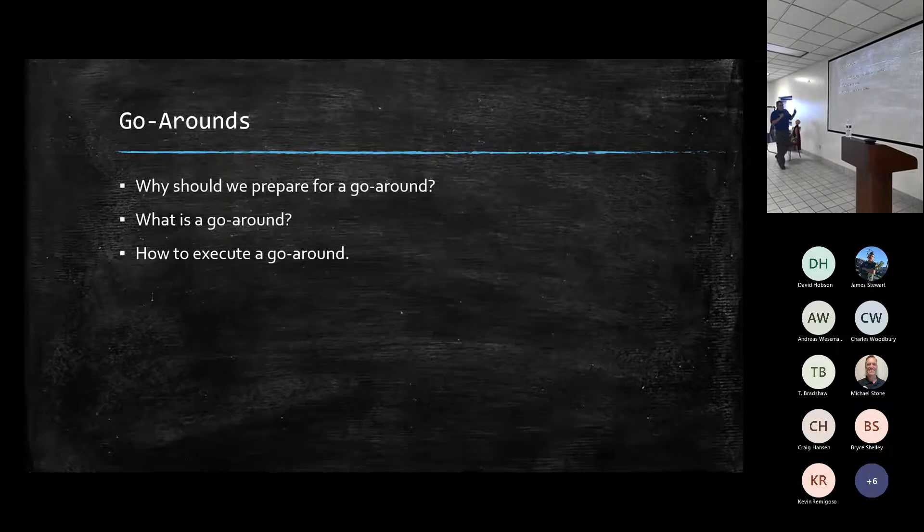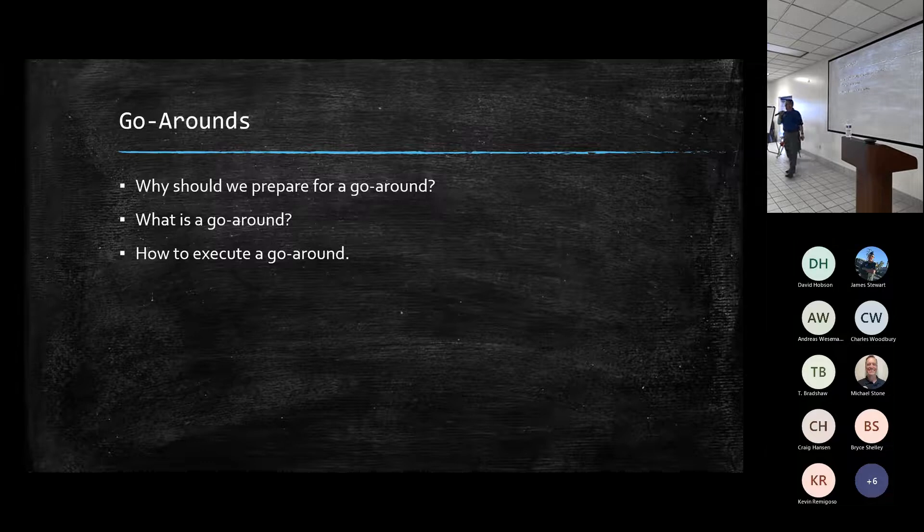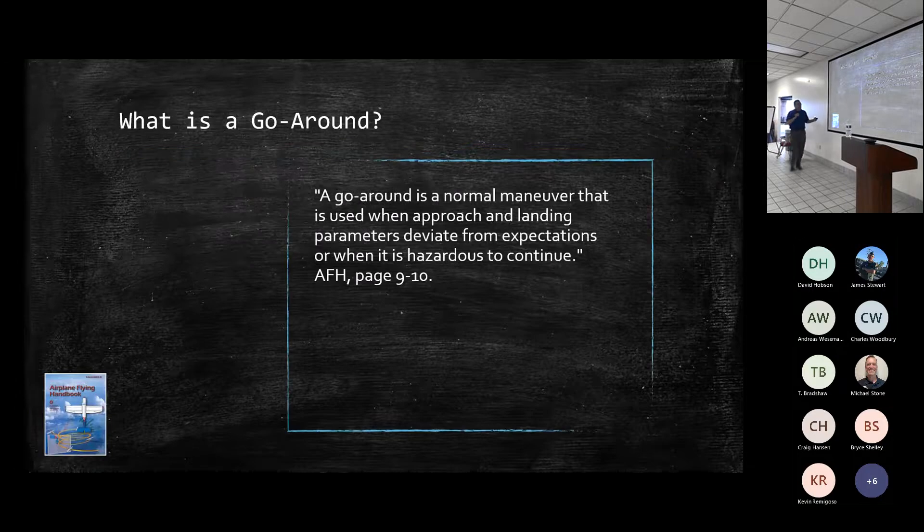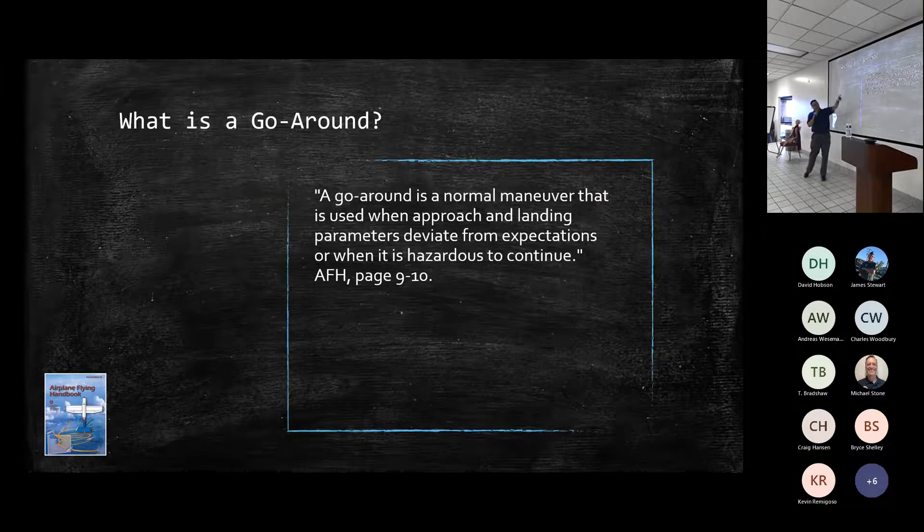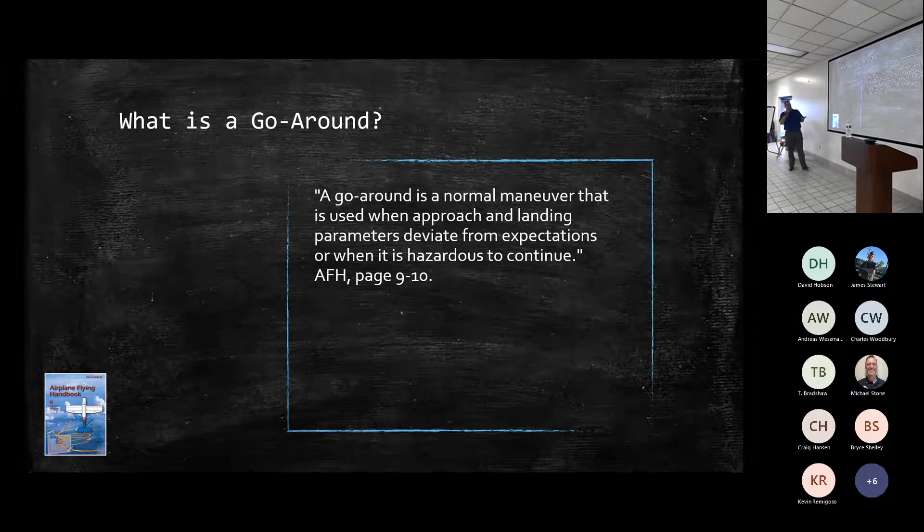So ultimately, why should we prepare for a go-around? Well, it sucks when you get the wrong thing, right? You should have gone around, airplane's broken, or you just put people in danger, and it should have been a go-around. So ultimately, what is a go-around? Well, according to the Airplane Flying Handbook, a go-around is a normal maneuver that is used when approach and landing parameters deviating from expectations or when it's hazardous to continue.